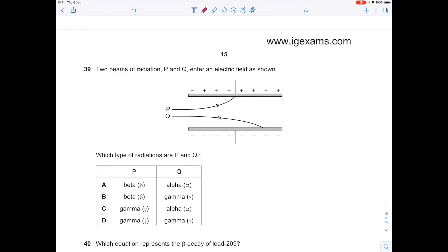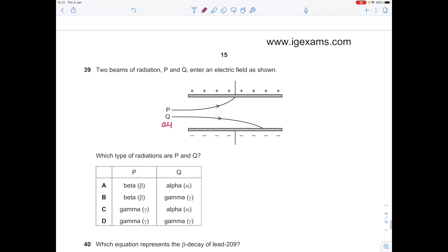Two beams of radiation P and Q enter an electric field as shown. What type of radiations are P and Q? We remember alpha particles are positively charged because they contain two protons and two neutrons, so they're going to be attracted to something negative, which is why Q is alpha. Beta particles are fast-moving electrons, they're negatively charged, so they're going to be attracted to something positive. So the answer is A.